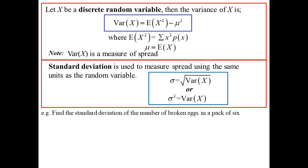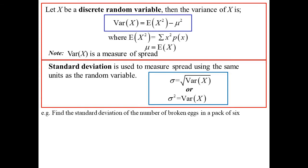So let's find the standard deviation. I now add in my X squared PX. Work that one out. That sums to be 0.6. So the variance is 0.51. Find the square root of that, we get 0.714.